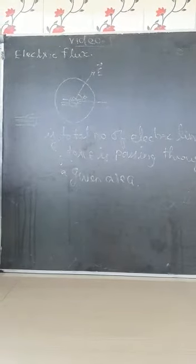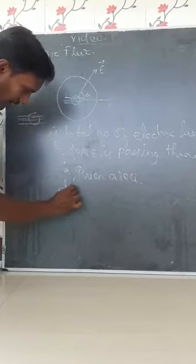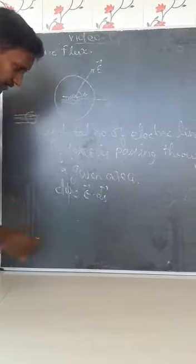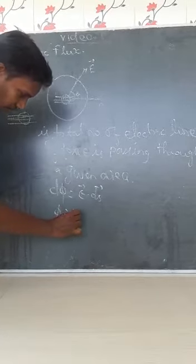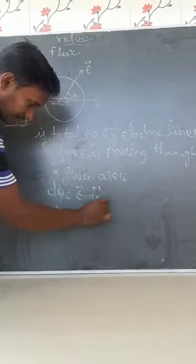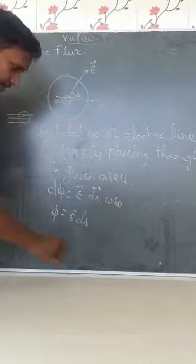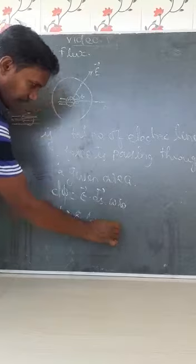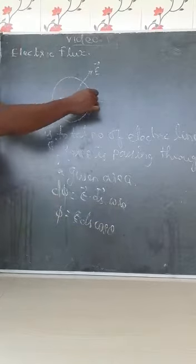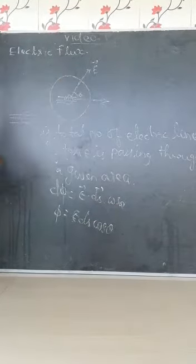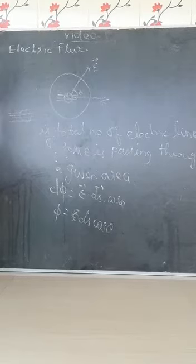Then how it is denoted: dΦ is equal to E vector dot dS vector. Then Φ is equal to E times dS times cos theta — E into dS into cos theta — because it makes a normal, so it makes an angle theta. The dot product gives a cos theta term, so Φ equals E·dS·cosθ.